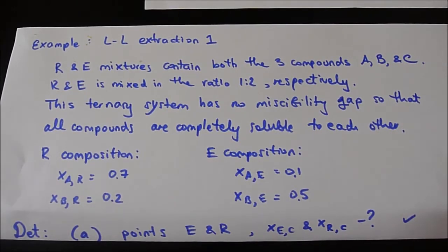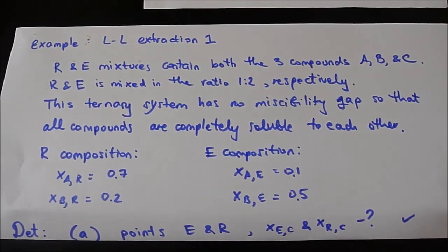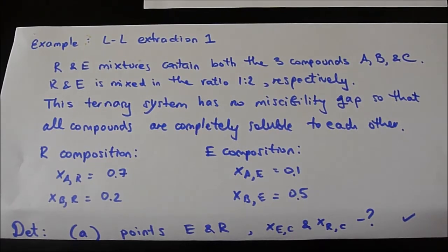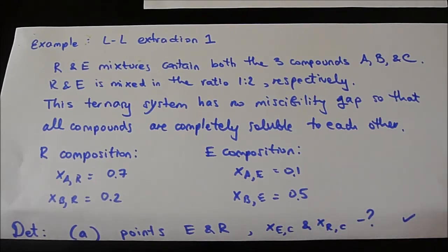This is the first liquid-liquid extraction example. Raffinate and extract mixtures each contain three compounds: A, B, and C. Raffinate and extract are mixed in the ratio 1 to 2 respectively. This ternary system has no miscibility gap, so all compounds are completely soluble to each other. The R composition is: XAR = 0.7, XBR = 0.2. The E composition is: XAE = 0.1, XBE = 0.5. We need to determine points E and R on the ternary diagram and find XCE and XCR.